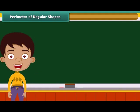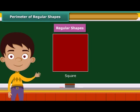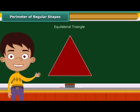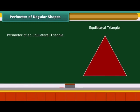Shapes that have all sides of equal length and all angles of equal measure are known as regular shapes. A square is a perfect example of a regular shape. Another regular shape is the equilateral triangle, whose three sides are equal. The perimeter of an equilateral triangle is 3 multiplied by its side. Suppose there is an equilateral triangle of side 3 cm — then its perimeter is 3 multiplied by 3, which is 9 cm.